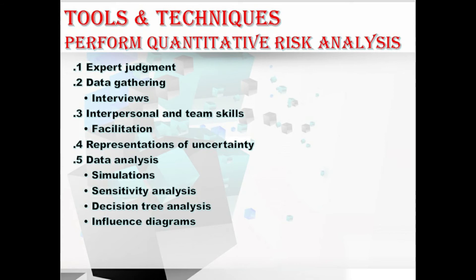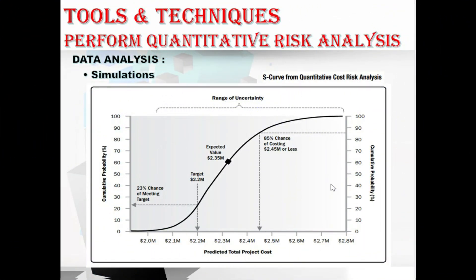The data analysis technique includes simulations, sensitivity analysis, decision tree analysis, and influence diagrams. For simulations, the quantitative risk analysis uses a model that simulates the combined effect of individual project risk and other sources of uncertainty to evaluate their potential impact on achieving project objectives. Simulations are typically performed using a Monte Carlo analysis. For a cost risk, the simulation uses the project cost estimates; for a schedule risk, the schedule network diagram and duration estimates are used. An integrated quantitative cost-schedule risk analysis uses both inputs, and the output is a quantitative risk analysis model.